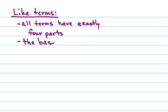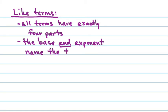The base and exponent name the term — in other words, they tell you what kind of term you have. Remember yesterday, P stood for punnets, so they were telling you what kind of objects there were. We knew that we could take things that were the same and group them together, collect or combine them.